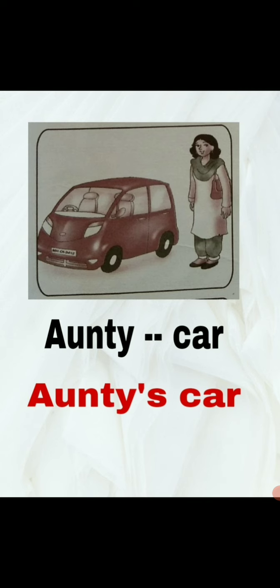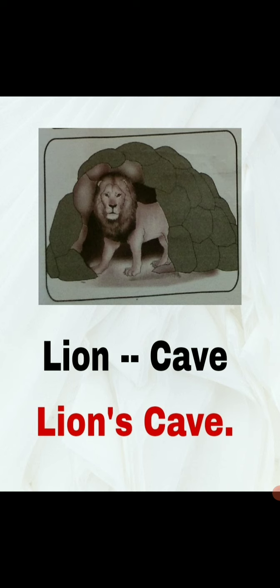The last example is Lion cave. Again there are two words. Lion is the animal and cave is the shelter — the house of the lion is called a cave. So the answer is Lion's cave. In the red color you can see the answer; in the black color you can see the question. Lion's cave.